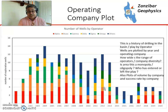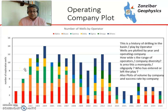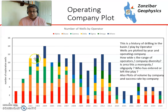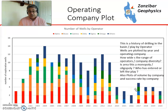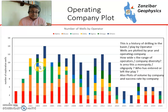Generally what tends to happen is you have relatively low diversity in the beginning — just a few people who want to enter the basin. Then when it becomes a hot play, everyone wants to get in, and there's a lot of farm-in and farm-out activity. Towards the latter part of the basin's life, you end up again with a relatively small number of companies who really know the basin and understand it, and the people who are unsuccessful move on to other things.